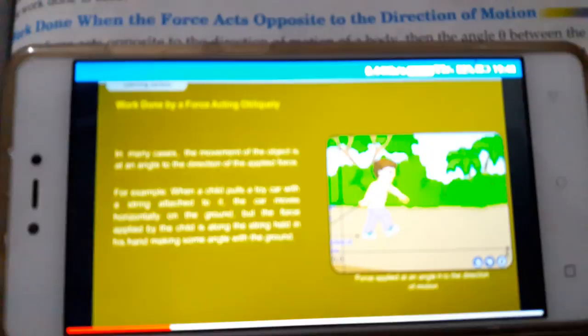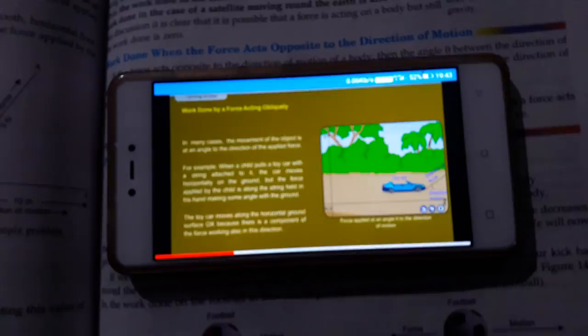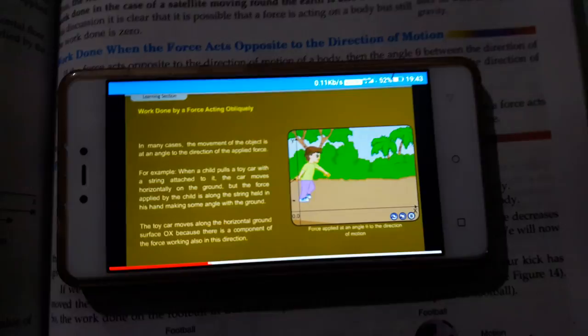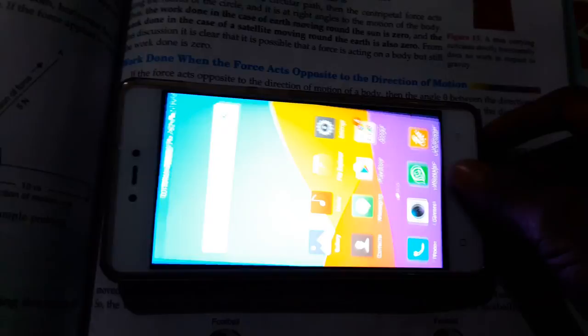The toy car moves along the horizontal ground surface because there is a component of the force working also in this direction. So friends, today's video is ended. Learn physics very easily and you will top in your class.